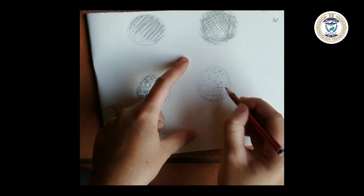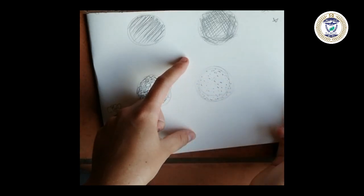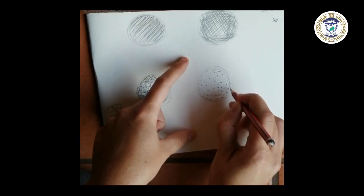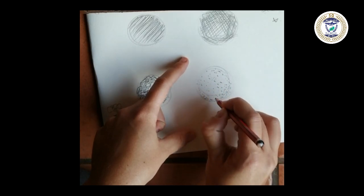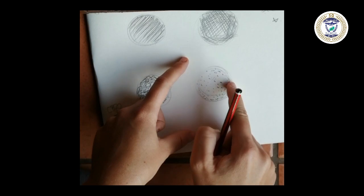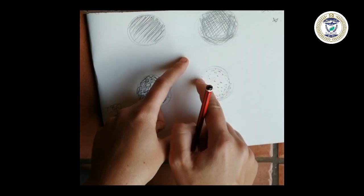And then if you want it lighter, you use more space between the dots. And if you want it darker, you create more dots in one space. So you see that's the darker part and then it goes light over there.